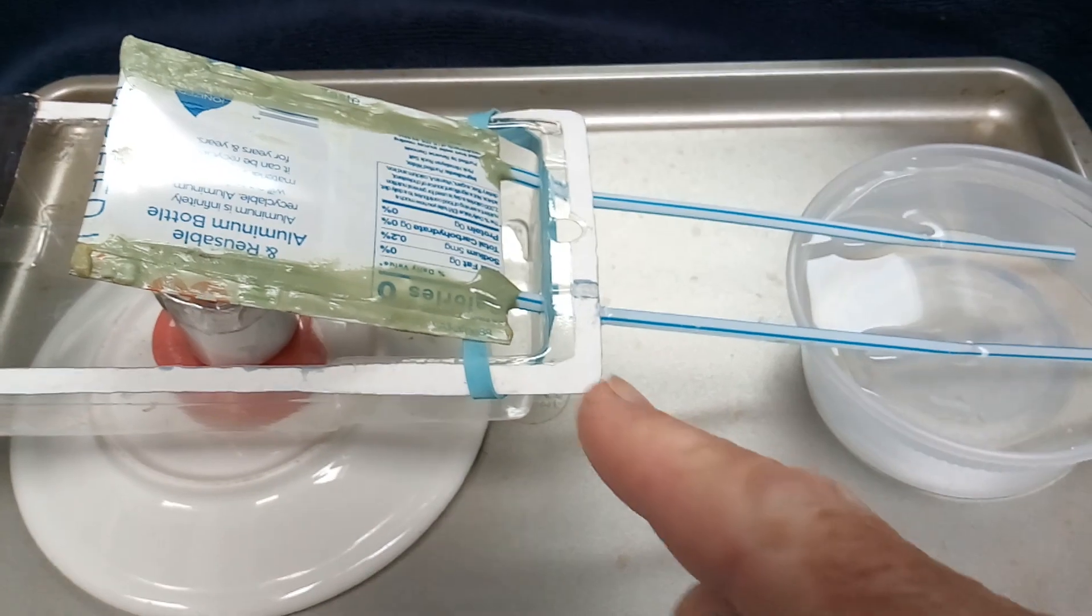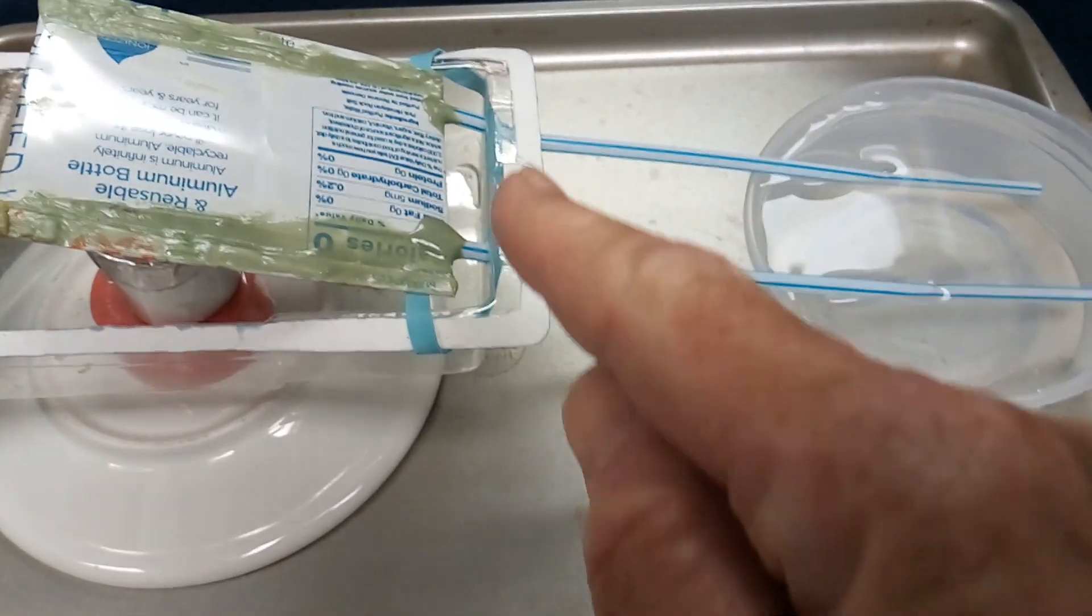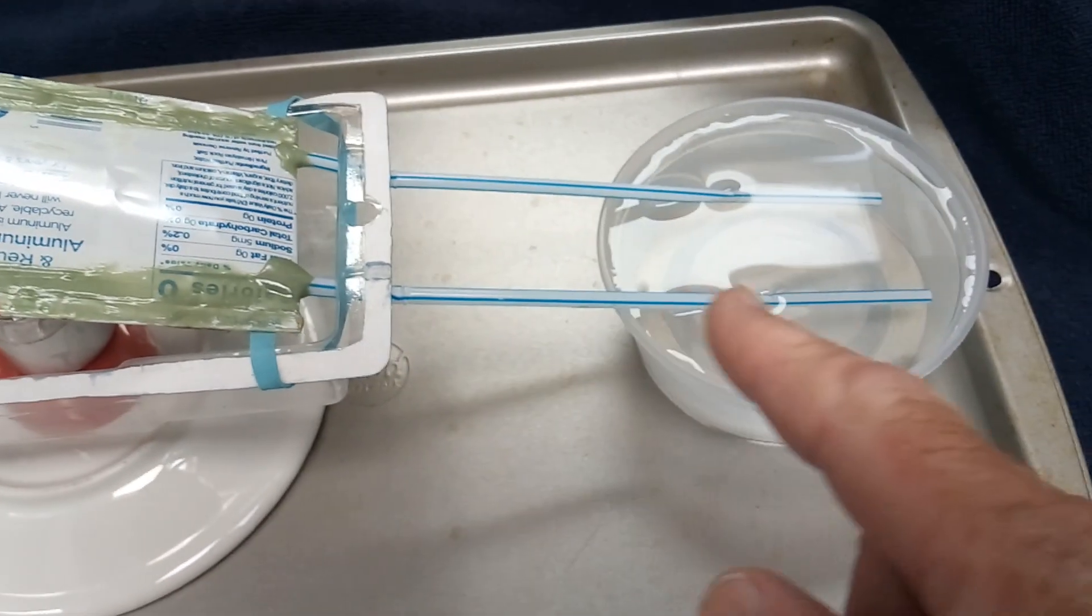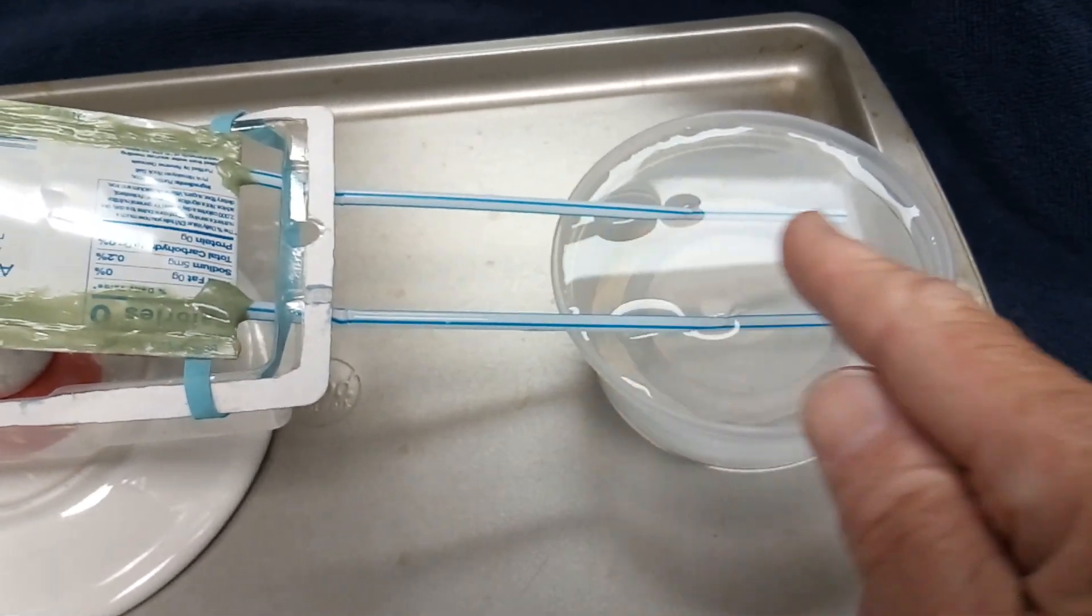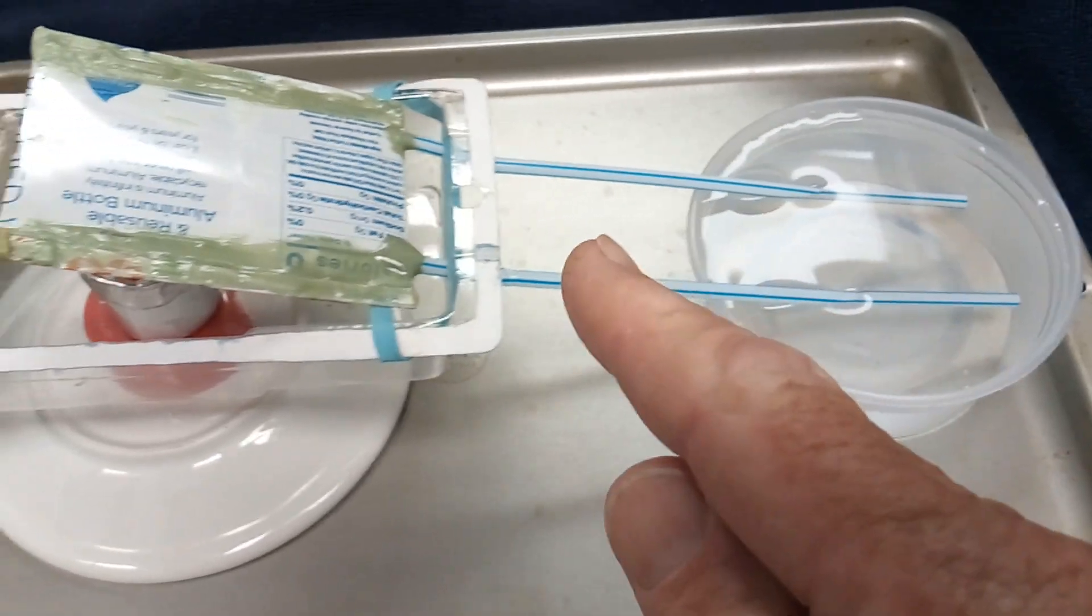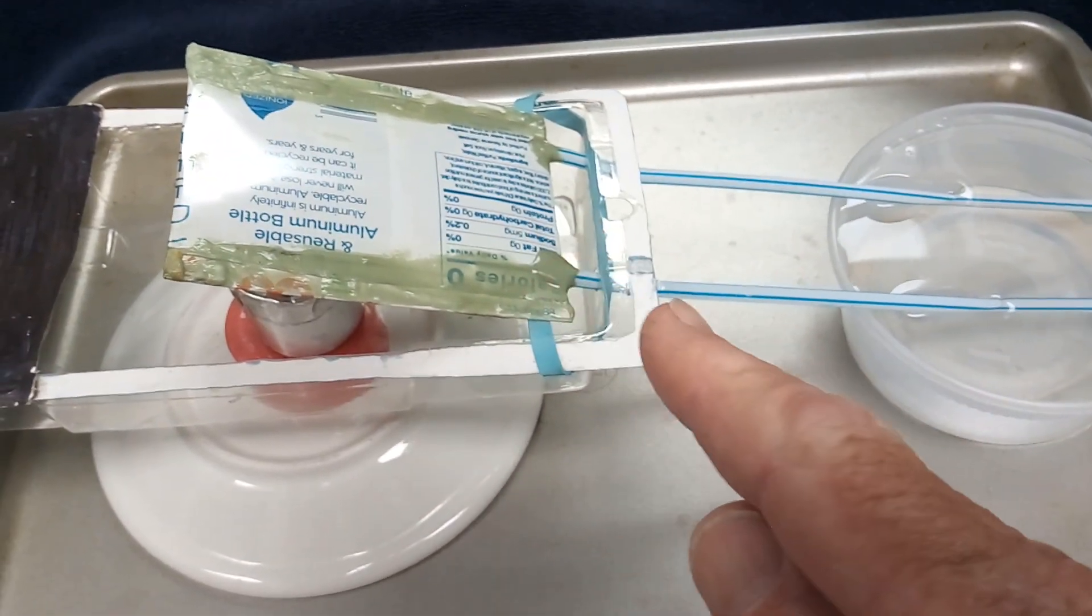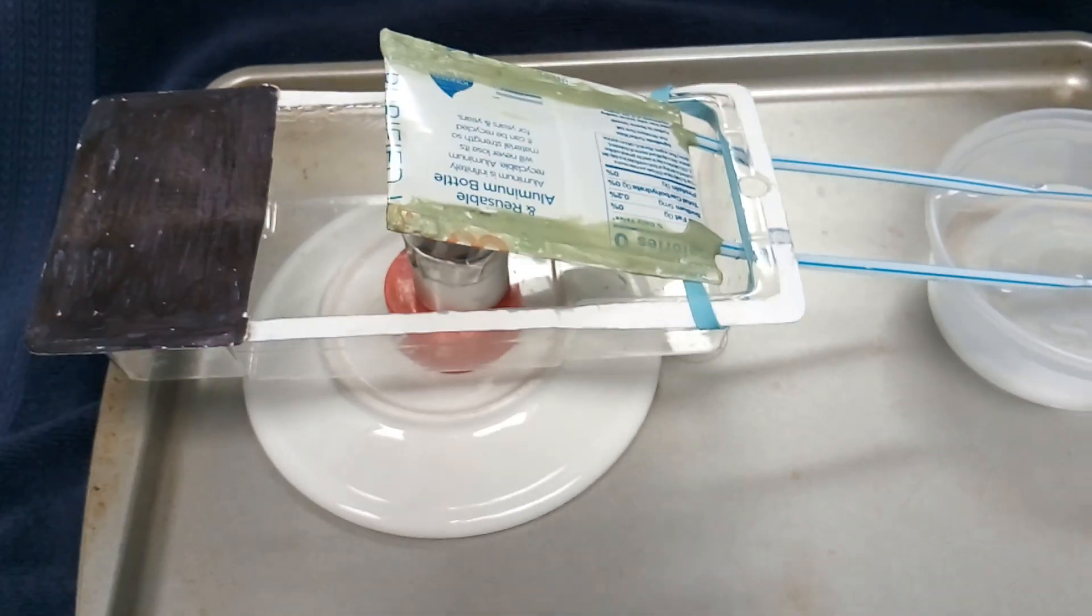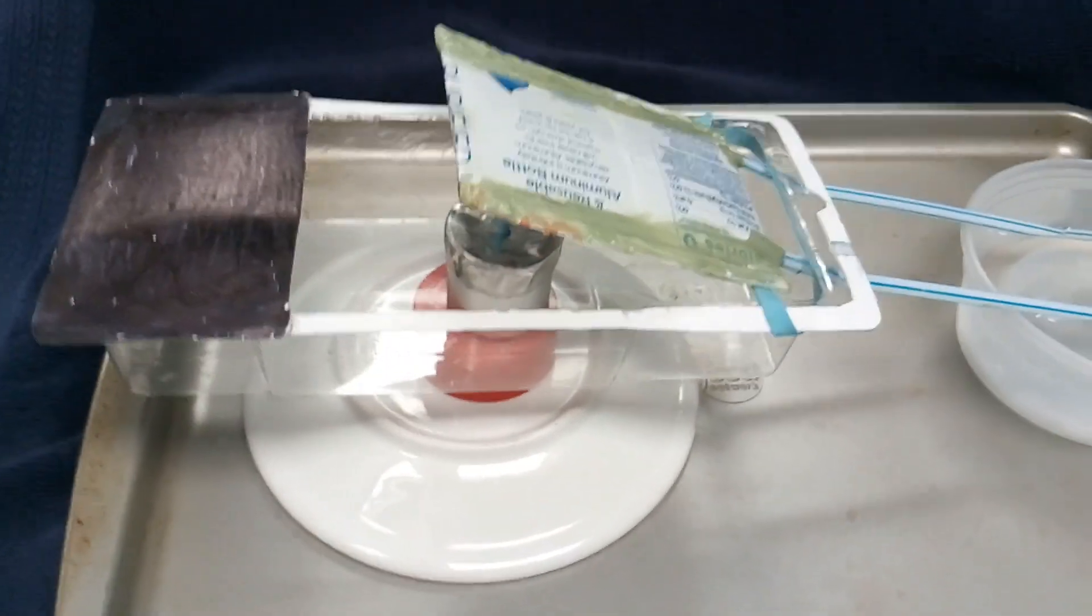You're going to see the water move in and out of these straws. Now depending on how much water is in this, sometimes the water column moves this way, but on this one here the way I have it set up, you're going to see it go up and down. You're going to hear it pop. This is a very interesting heat engine.